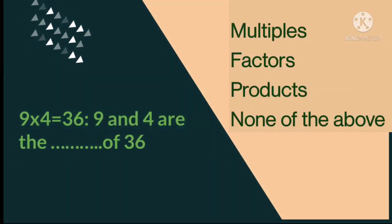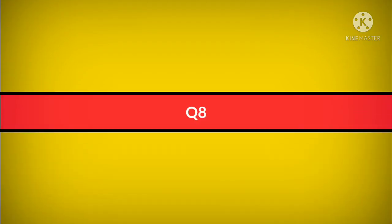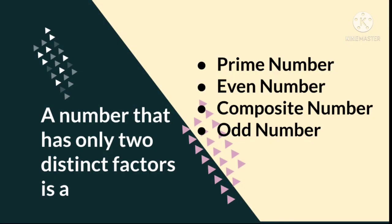Question number 7: 9 multiply 4 is equal to 36. 9 and 4 are the dash of 36. Your options are multiples, factors, sum, or difference. Question number 8: A number that has only two different factors is a prime number, even number, composite number, or odd number.